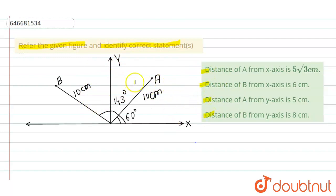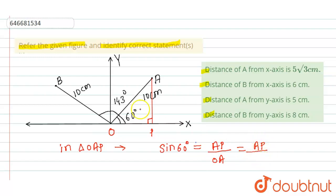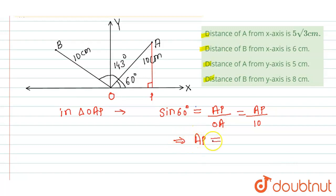We have to find the distance of A from the x and y axis, and the distance of B from the x and y axis. Let's first talk about point A. The distance of A from the x-axis is the perpendicular distance — let's call it P. In triangle OAP, I can write: sin 60° = AP divided by OA. OA is given as 10 centimeters.